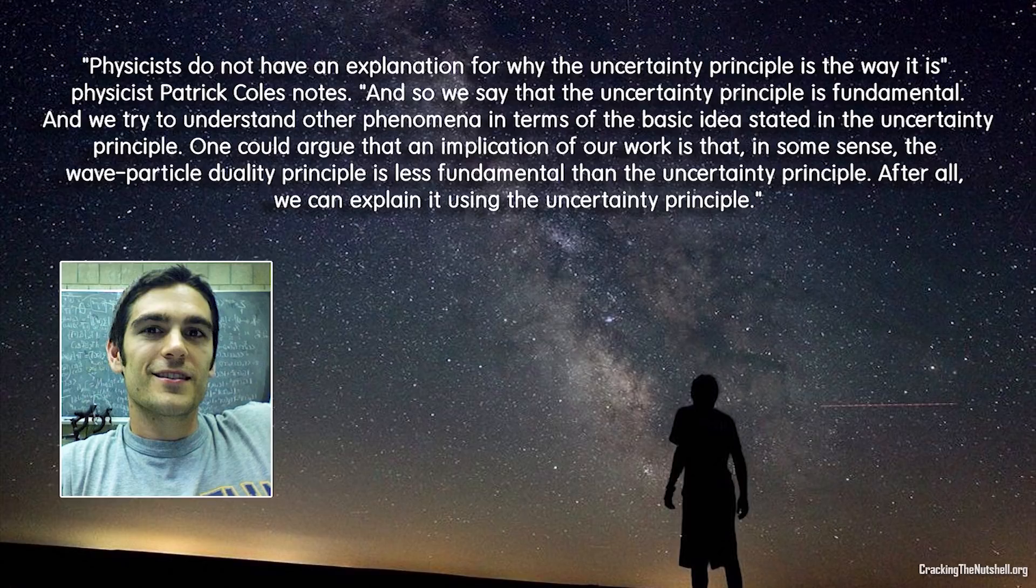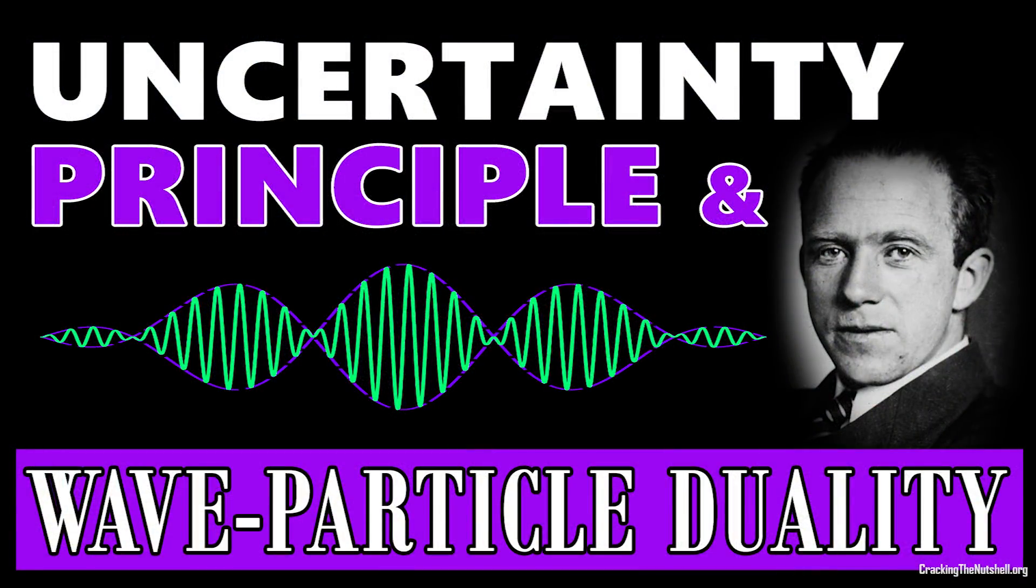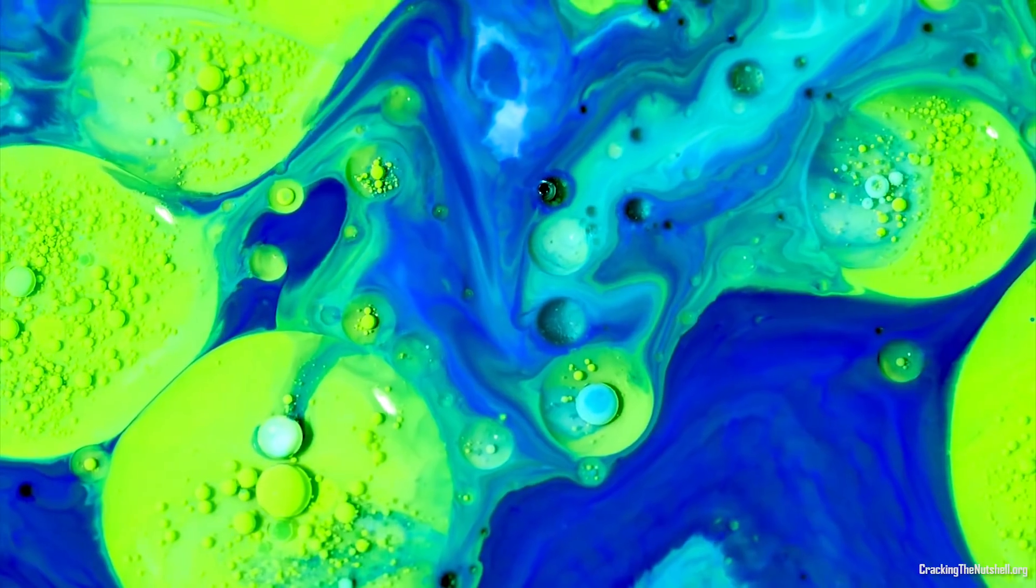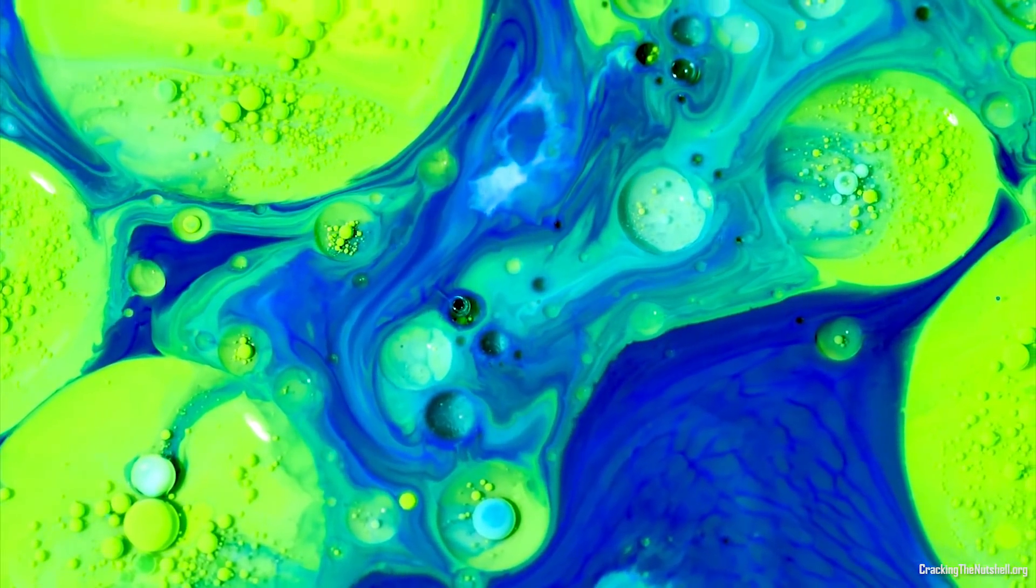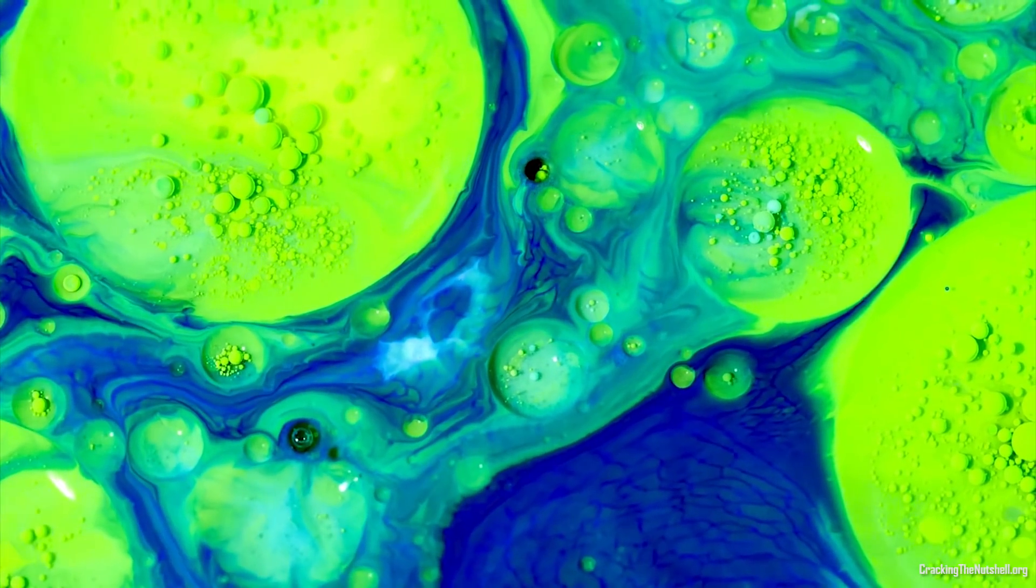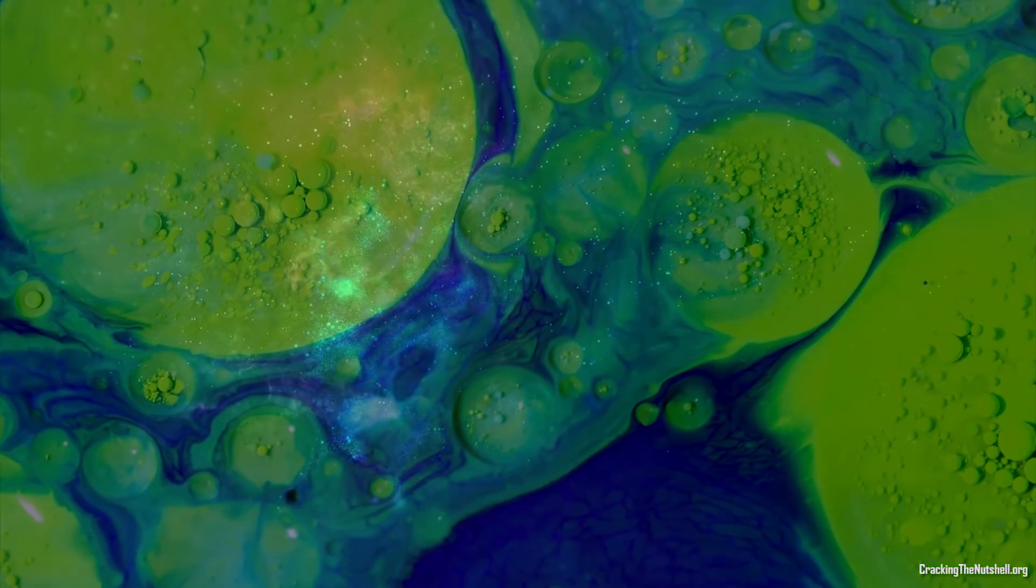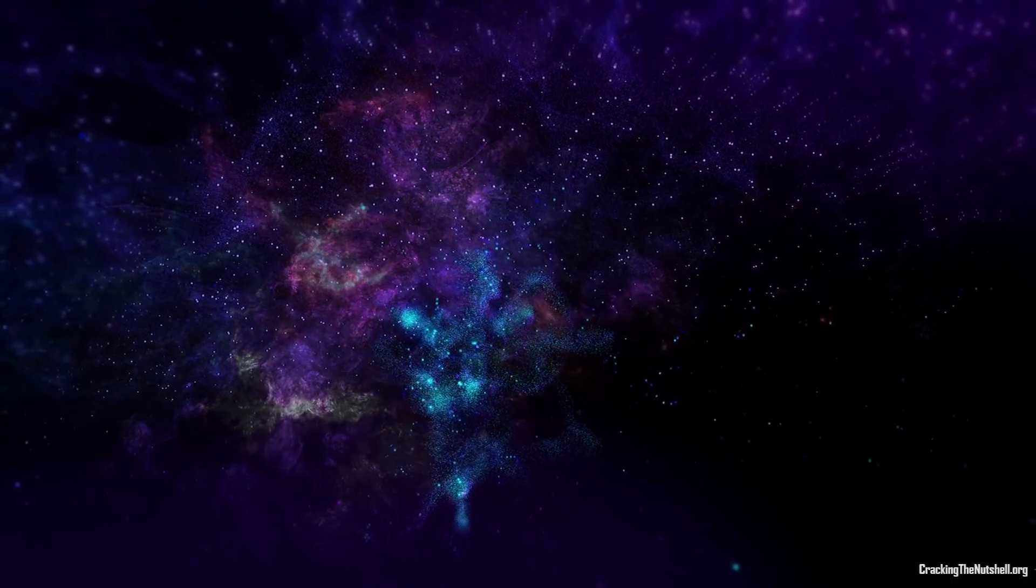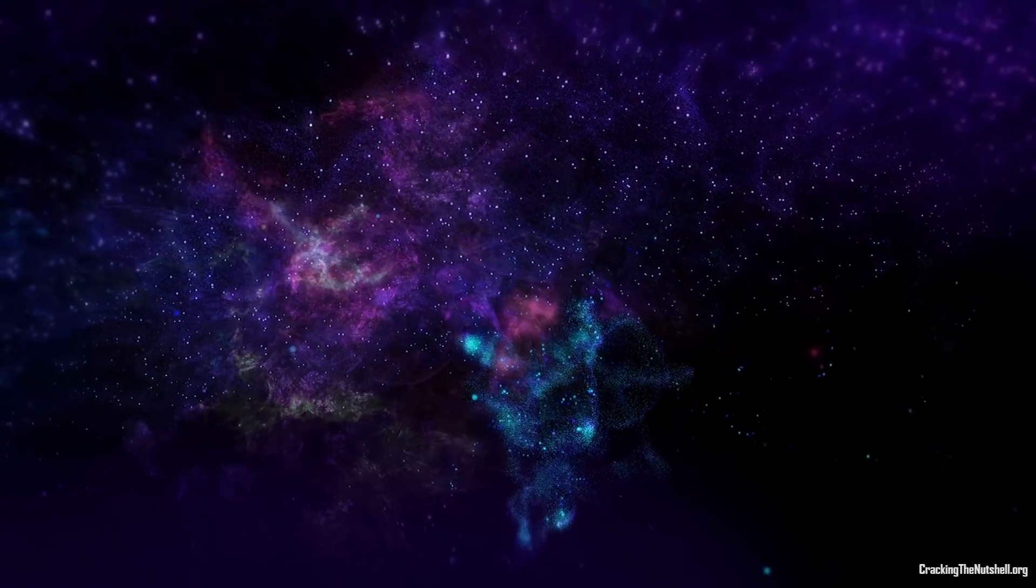One could argue that an implication of our work is that, in some sense, the wave-particle duality principle is less fundamental than the uncertainty principle. After all, we can explain it using the uncertainty principle. This is quite remarkable, because in one of my previous videos I explained in quite a lot of detail the way in which uncertainty is a natural aspect of wave-like systems. But here we're talking about something more profound. We're in fact saying that uncertainty might be fundamental, and that wave-particle duality might just be a particular instance reflecting this fundamental aspect of reality. So, it wouldn't be accurate to say that uncertainty springs out of wave-particle duality. But instead, perhaps we should say that wave-particle duality is just one particular way we have of talking about uncertainty. Just one particular lens or mathematical framework to make sense of it within the world of quantum mechanics.